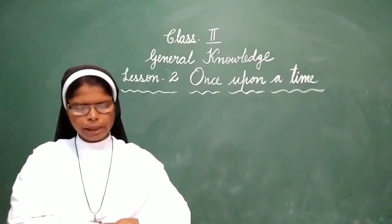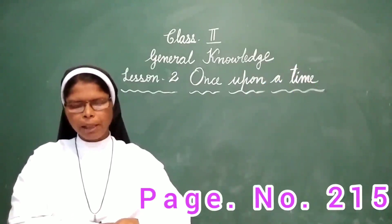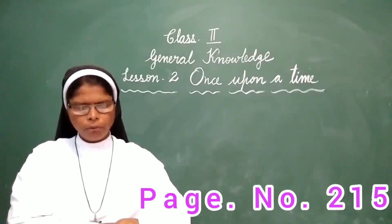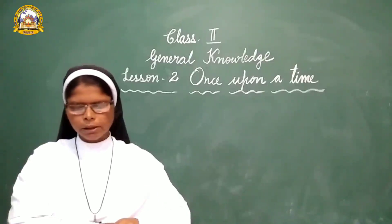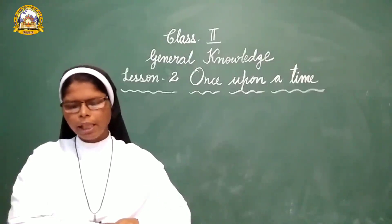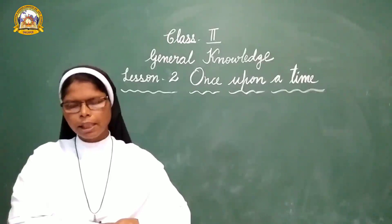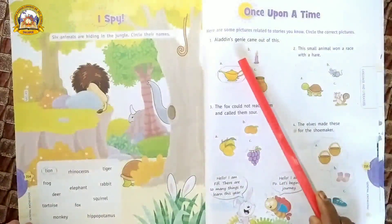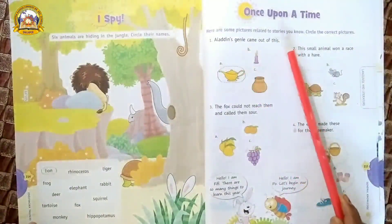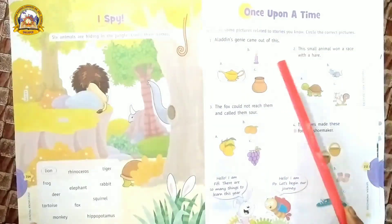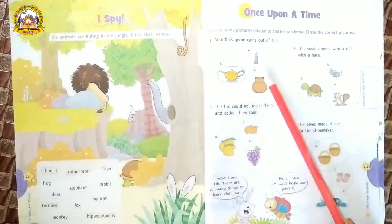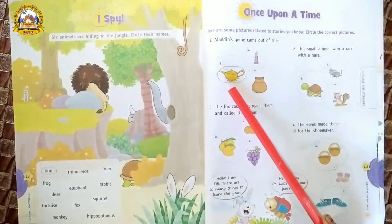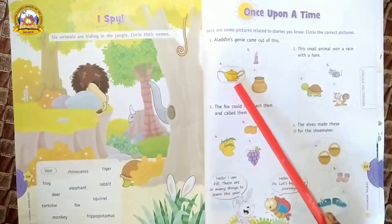Now let us open page number 215 in your first semester book. Here are some pictures related to stories you know. Circle the correct pictures. First: Aladdin's Genie came out of this — Genie's lamp, candle, or pot? Yes, Genie's lamp. You have to circle the picture of the lamp.